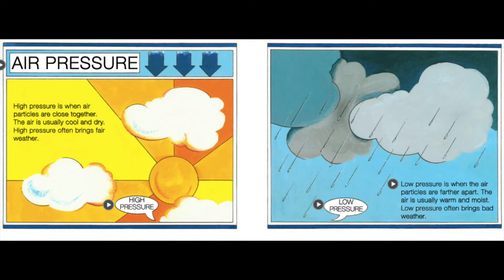High pressure is when air particles are close together. The air is usually cool and dry. High pressure often brings fair weather. Low pressure is when the air particles are farther apart. The air is usually warm and moist. Low pressure often brings bad weather.